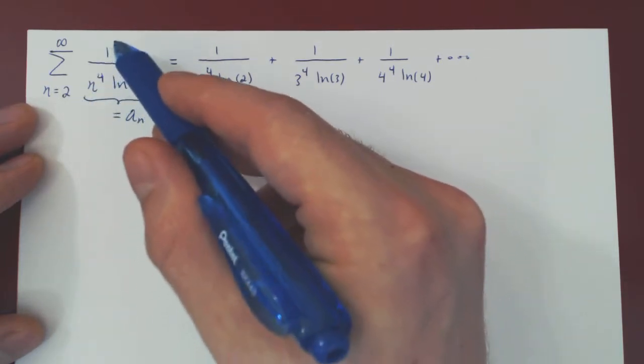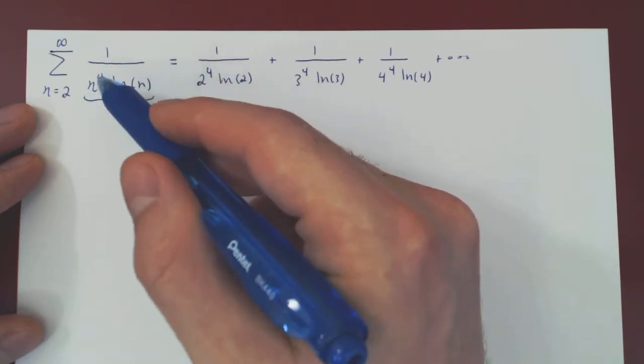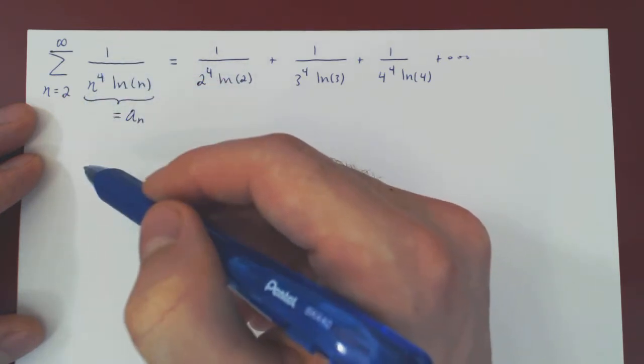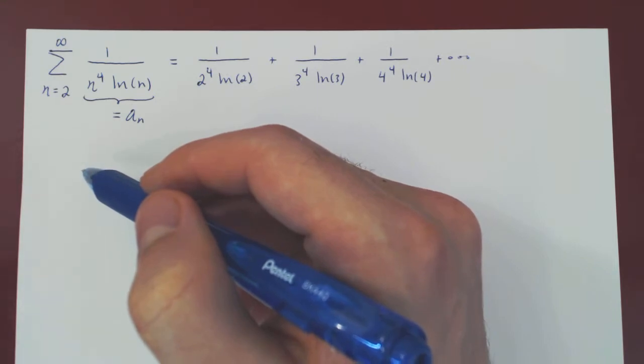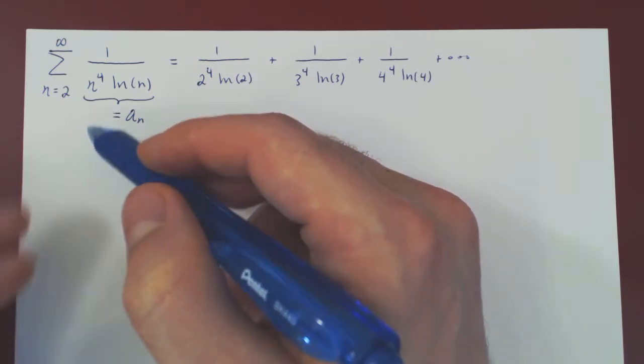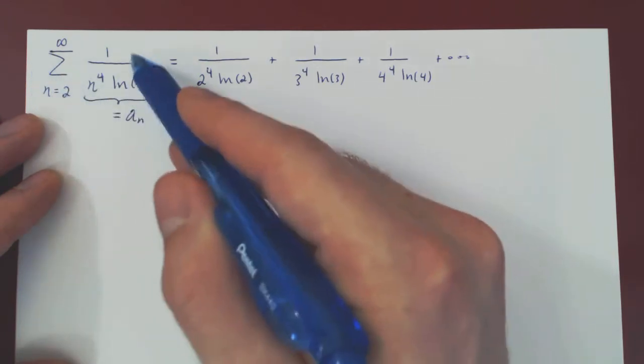And this looks good because then, if we only sum 1 over n to the 4, this would be a p-series with p equals 4, which would imply, as 4 is larger than 1, that we have convergence. So we should expect this series to converge.